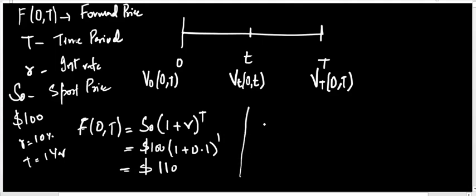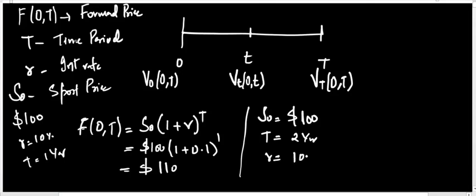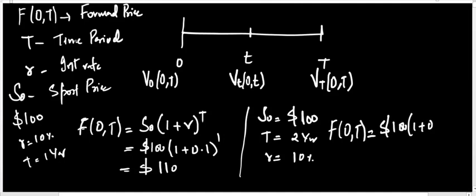Now let me take another case where the spot price is $100, the time is 2 years, and the rate of interest is 10%. The forward price will be $100 × (1 + r)^t, which gives a forward price of $121.